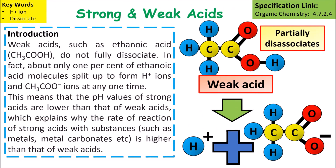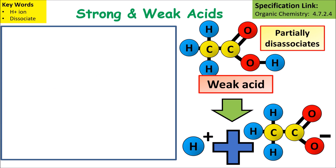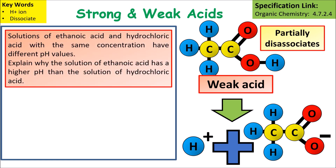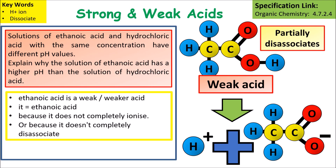Weak acids such as ethanoic acid do not fully dissociate — in fact, only about one percent of ethanoic acid molecules split up to form hydrogen ions. This means that the pH values of strong acids are much lower than those of weak acids, which explains why the rate of reaction for strong acids is higher than for weak acids. For example, solutions of ethanoic acid and hydrochloric acid at the same concentration have different pH values. Ethanoic acid has a higher pH because it is a weak acid that does not completely ionize or dissociate to form hydrogen ions.